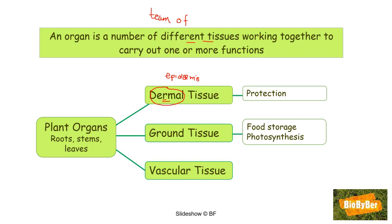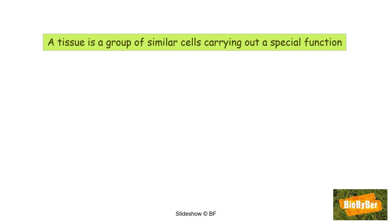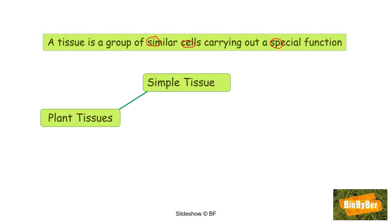The last tissue we observed was vascular tissue, or transport tissue. There are two types: xylem tissue, which carries water and minerals, and phloem tissue, which carries food. Now we also need to remember that tissues are made of cells. A tissue is a group of similar cells carrying out a special function. When we look at tissues in the plant, we hope to see the cells from which they are made.